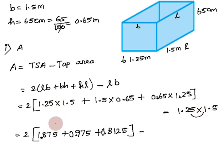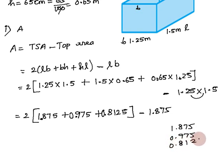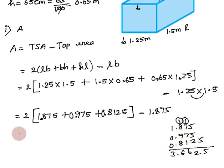Now adding the values: 1.875 plus 0.975 plus 0.8125. Adding step by step: 5+5=10, carry 1; 7+7=14+1+1=16 carry 1; 8+9+1=18, 8+8=16, 16+10=26... The total comes to 3.6625.